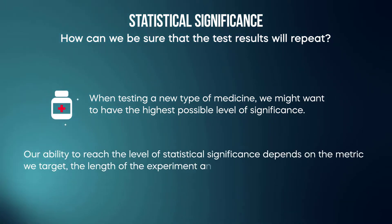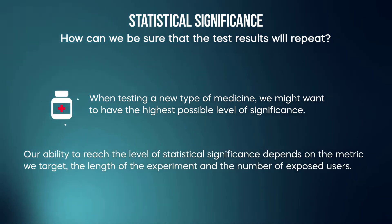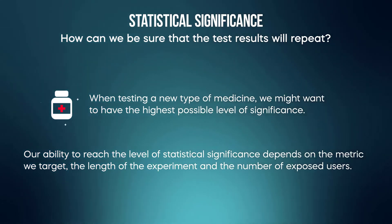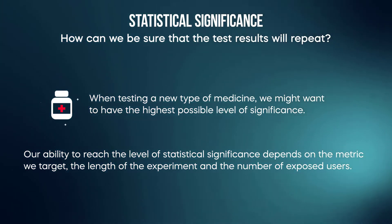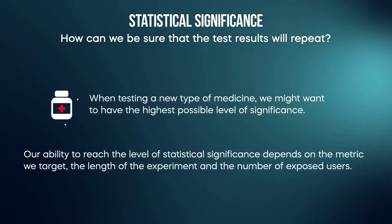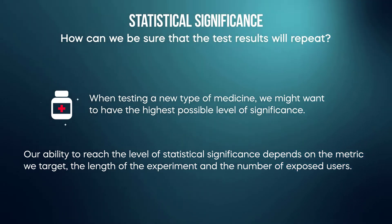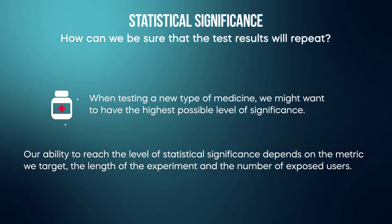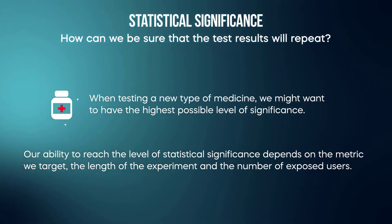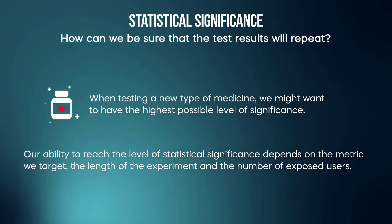Our ability to reach the level of statistical significance depends on the metrics we target, the length of the experiment, and the number of exposed users. Later in the course, we will discuss how to calculate the duration of the test and the number of exposed users needed to always reach statistical significance depending on our minimum detectable effect.